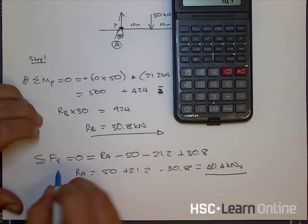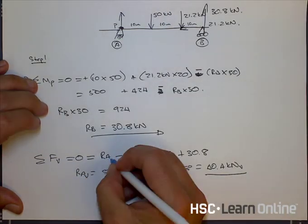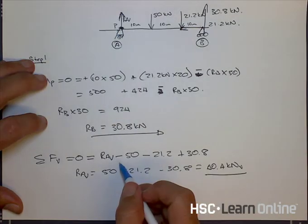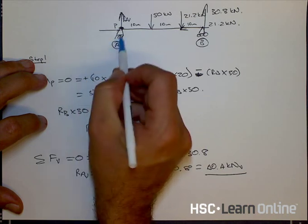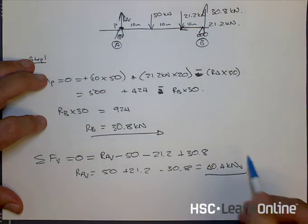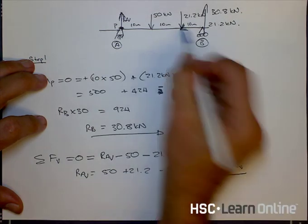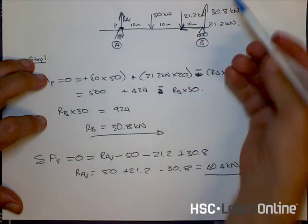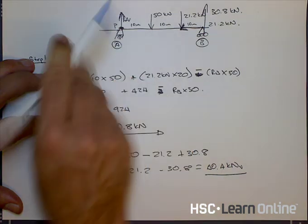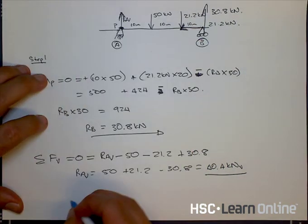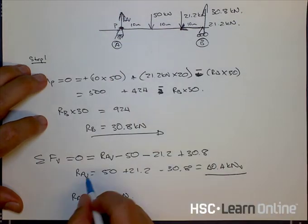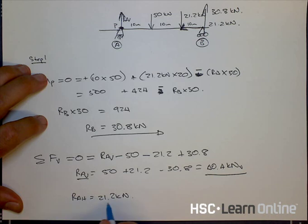So that's the vertical component of RA, RA vertical, just the vertical part of RA. But because this is a fixed support and this is a rolling support, RA is the only part of this bridge which can react horizontally, because we've still got this 21.2 kilonewtons trying to push the bridge this way. And because the rolling support can't do anything about that, this is the only reaction support that's going to be pushing back, which means RA horizontal must equal 21.2 kilonewtons, because it's got to be pushing against that.